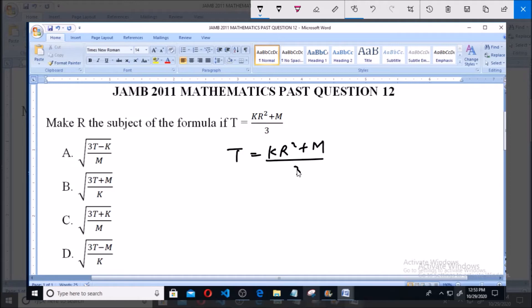Now we multiply both sides by 3 to eliminate this 3, so we have 3T equals KR squared plus M. Now let's take away this M from this side, so we subtract M from both sides. By subtracting M from both sides, we have 3T minus M equals KR squared.